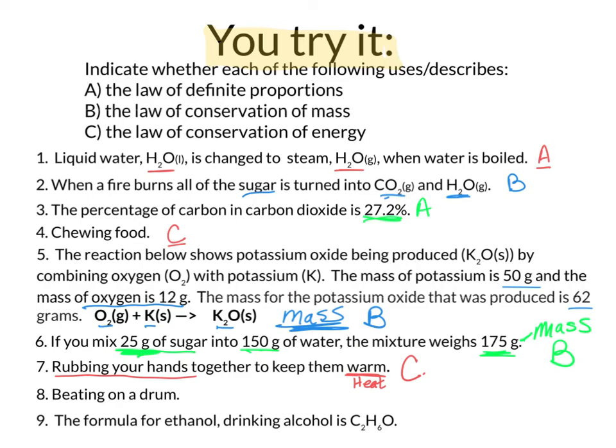Number eight, beating on a drum. Here we're taking the energy of motion again, we're turning it into sound energy. This is the law of conservation of energy. And that leaves us with number nine, drum roll please. And that is the formula for ethanol drinking alcohol is C2H6O. Because we have a certain proportion and ratio of the carbon to hydrogen to oxygen, that tells us that this is the law of definite proportions. Hopefully you got those right, and there'll be some more practice online.